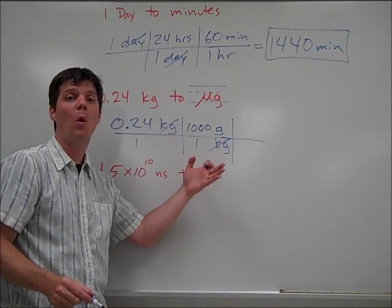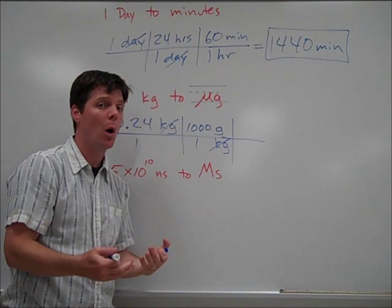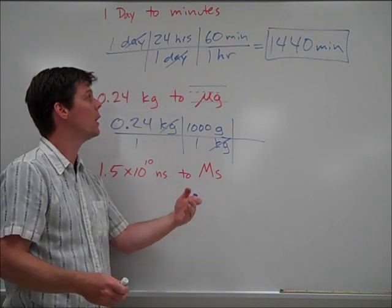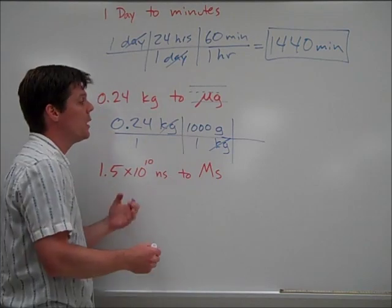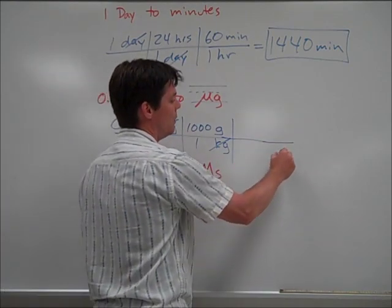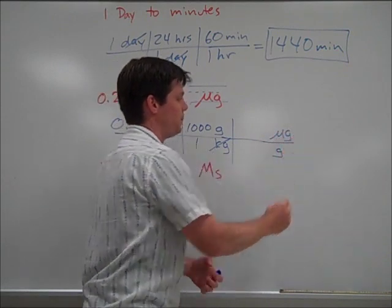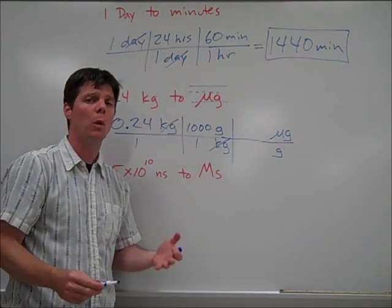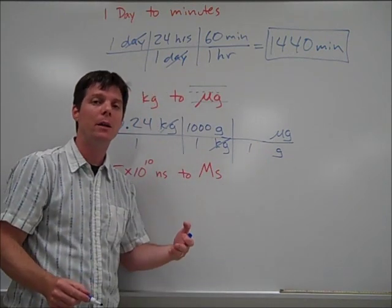This will allow us to cancel that unit of kilograms. Now, if I stopped at this point, I would have converted from 0.24 kilograms to how many grams that is, but I don't want to stop yet at this point. I want to convert one more step to figure out how many micrograms this mass is. So I need the relationship of grams to micrograms. Now, again, micro means one million. So in one gram, there are 1,000,000 micrograms.